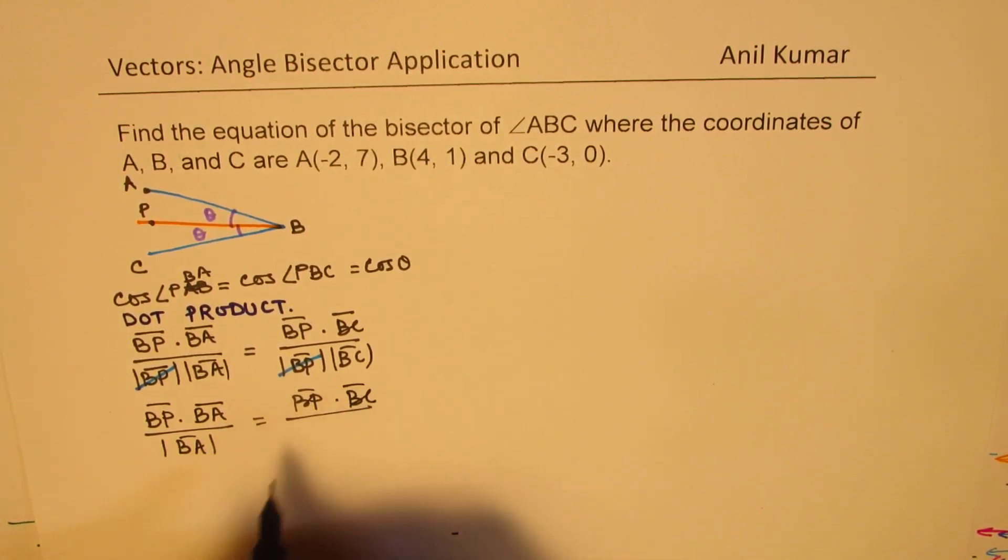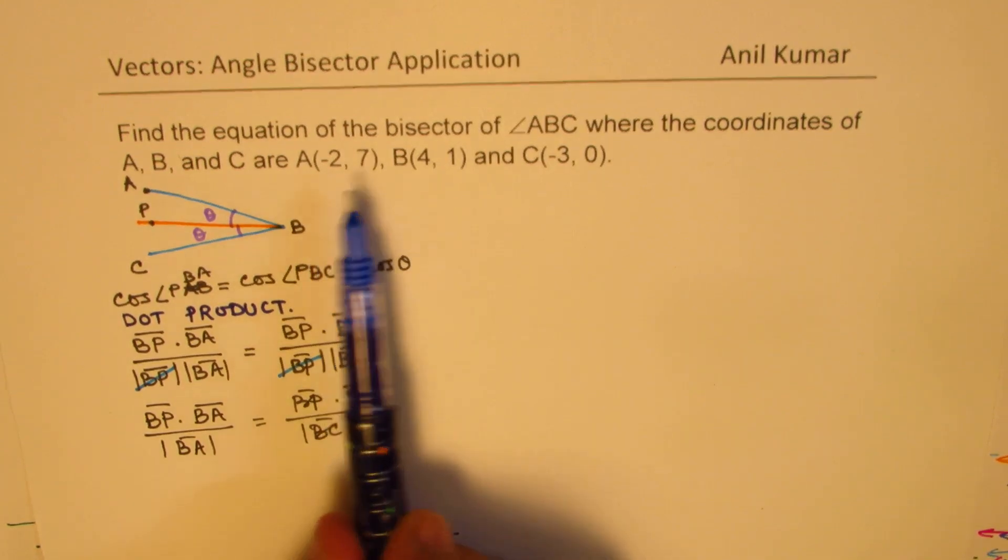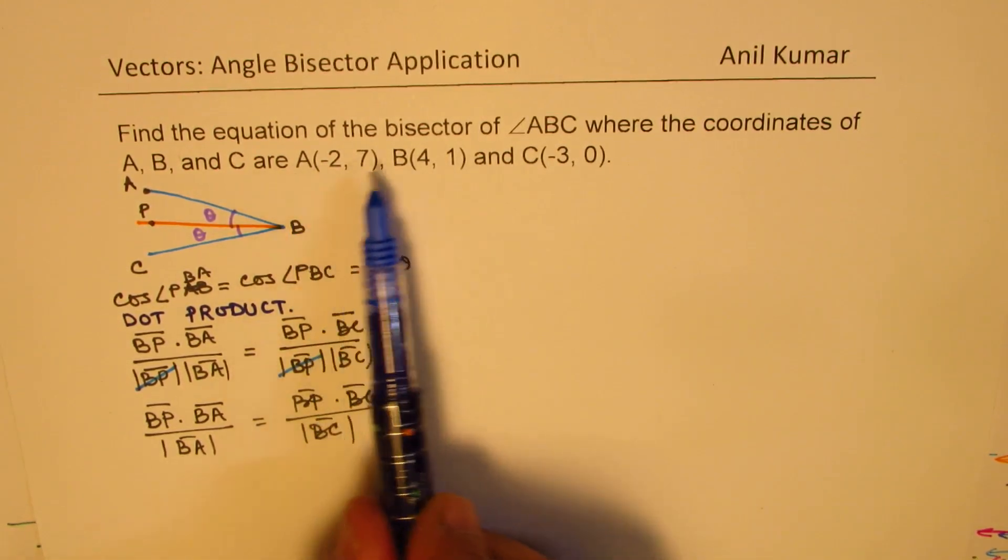So, I hope this derivation is absolutely clear. Well, we need to figure out what is BP, BA, and BC. Clearly, we are given the points, so we can find what is BP, what is BA, and BC.